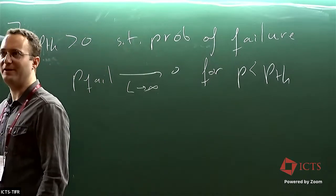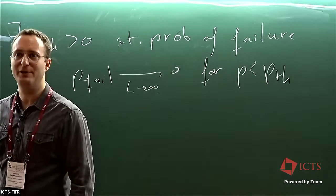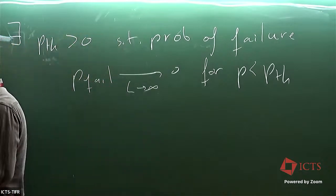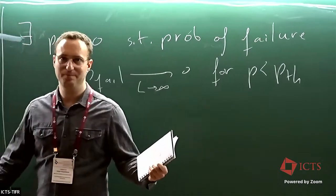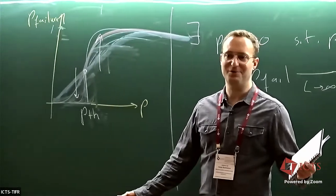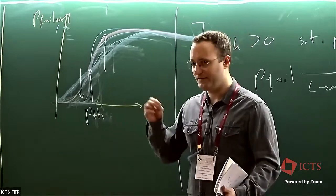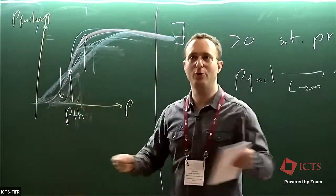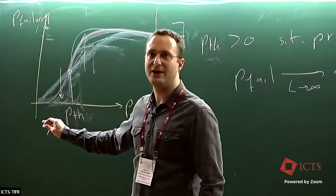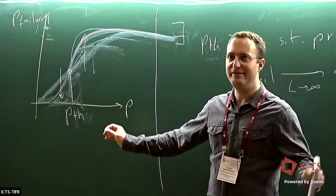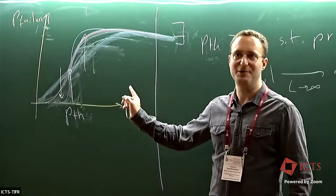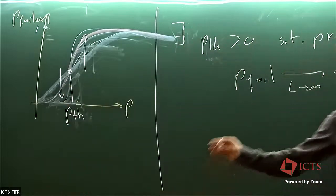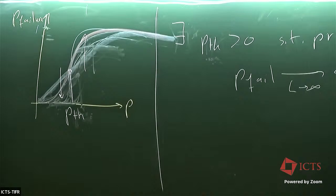The threshold is critically important. If you go to an experimentalist and say 'I have a code,' they'll immediately ask: what is the threshold? If the errors of your gates and operations are below the threshold, you can put together more and more qubits and the probability of failure goes to zero. If your errors are worse than the threshold, you cannot reach zero errors by adding more qubits — there's nothing to be done.